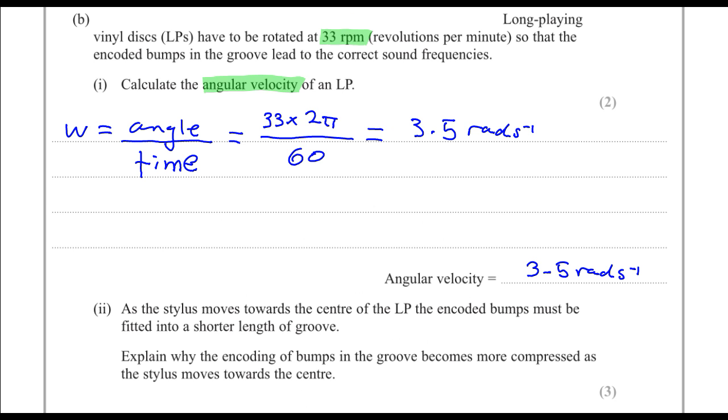The next part states that as the stylus moves towards the center of the LP, the encoded bumps must be fitted into a shorter length of groove. Explain why the encoding of the bumps in the groove becomes more compressed as the stylus moves towards the center.